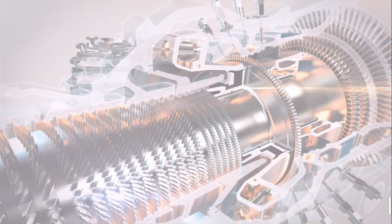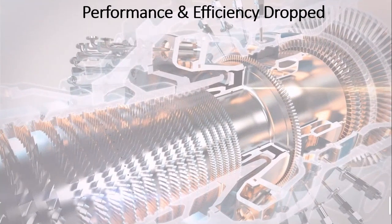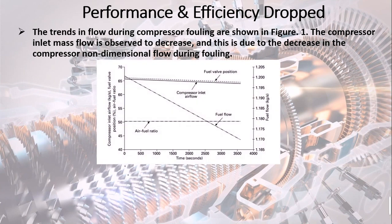Reason 1: Performance and efficiency drop. The trends in flow during compressor fouling are shown in the figure. The compressor inlet mass flow is observed to decrease, and this is due to the decrease in the compressor non-dimensional flow during fouling.